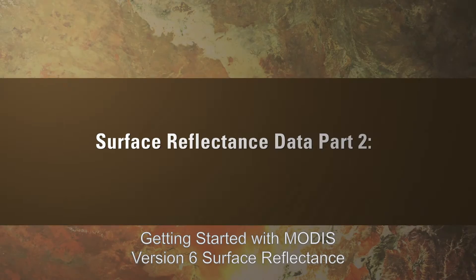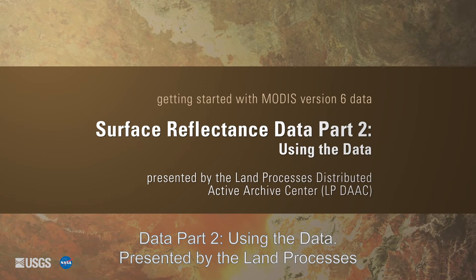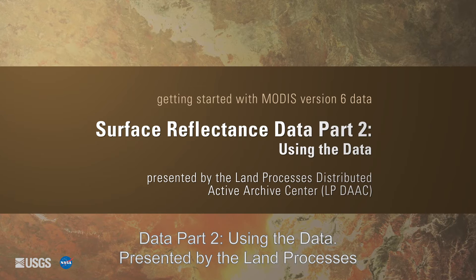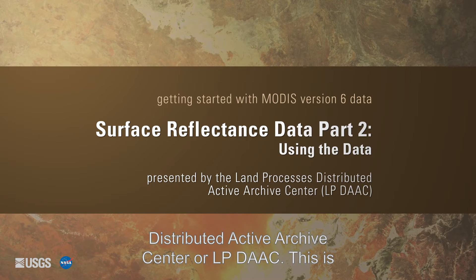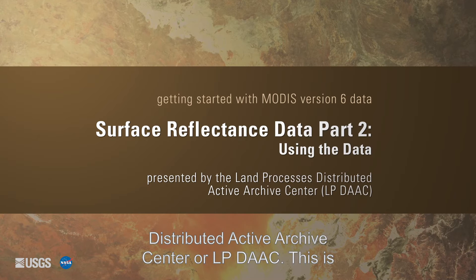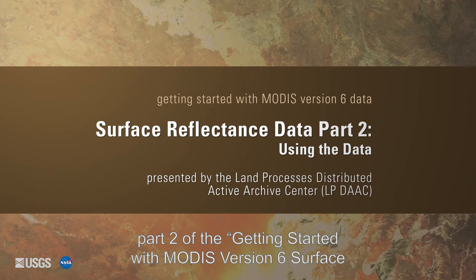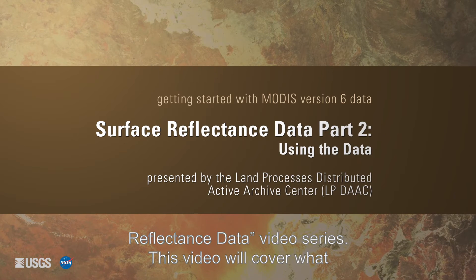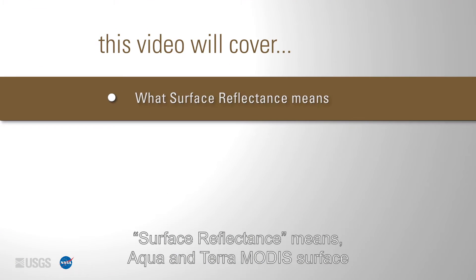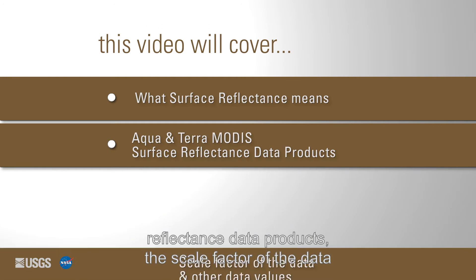Getting started with MODIS version 6 surface reflectance data, part 2, presented by the Land Processes Distributed Active Archive Center or LP DAAC. This is part 2 of the getting started with MODIS version 6 surface reflectance data video series. This video will cover what surface reflectance means, Aqua and Terra MODIS surface reflectance data products, the scale factor of the data, and various MODIS band combinations.